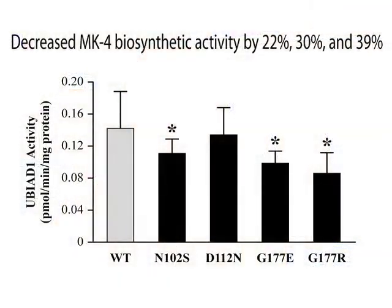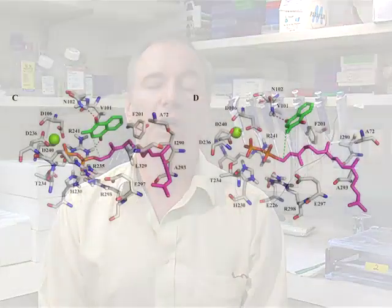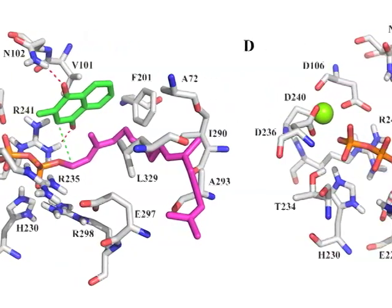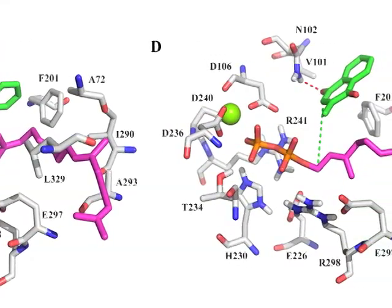We were immediately interested in the enzymatic implications of SCD mutations, and working with Toshio Okano of Japan, who recently published in Nature that UBI-D1 was a first vitamin K biosynthesis enzyme, we examined wild type and SCD mutant UBI-D1 to find that vitamin K biosynthesis was reduced by 20 to 40 percent by different SCD mutations. We performed molecular modeling on SCD mutant UBI-D1 with Dr. Wolfgang Brandt of Germany, and we show that the SCD mutations introduced striking structural perturbations to transmembrane helices and key amino acid residues in the active site. The molecular modeling results coincided very nicely with our enzymology results.